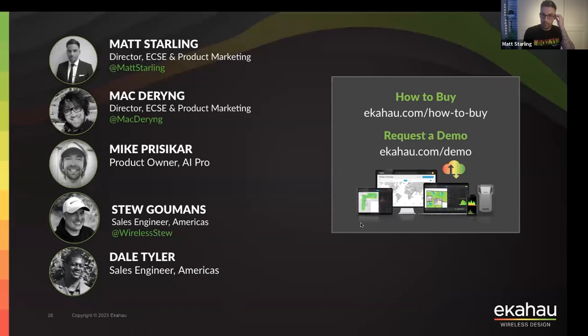During today's call we highlighted some of the new features users can expect to see in Echo AI Pro 11.2: light mode, AP distances, viewing adjacent floor APs, and new fast wall drawing. The question is: when will 11.2 be available? It will be available during next week. Keyboard shortcuts are also being posted in the chat, and they will be updated after 11.2 is released.